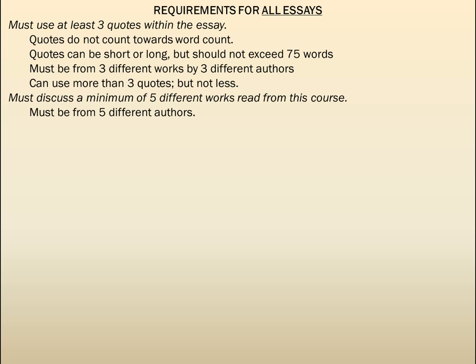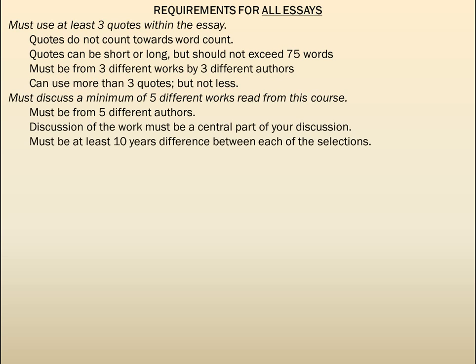The discussion of each work must be a central part of your paper — you can't just briefly mention it in passing. You actually have to engage with it meaningfully and have it substantially present. This is not a hard and fast rule, but generally there should be at least ten years difference between each of the selections. Your writings should be spread out chronologically; if you have five writings all from 1715, you're not really representing the breadth of American literature we've looked at in this course.